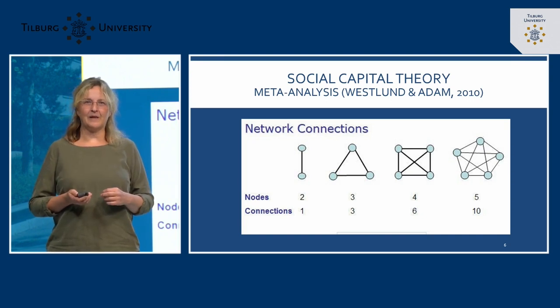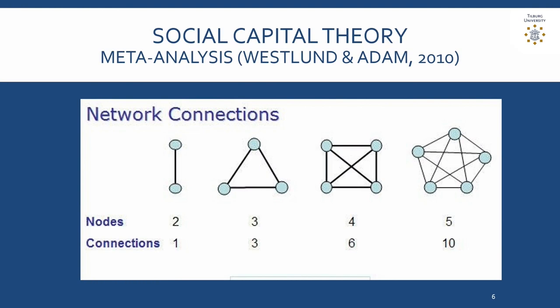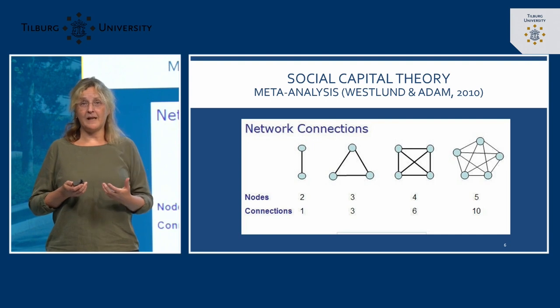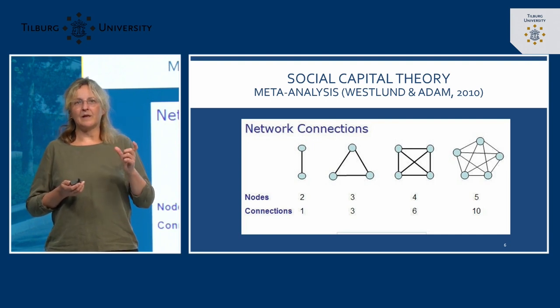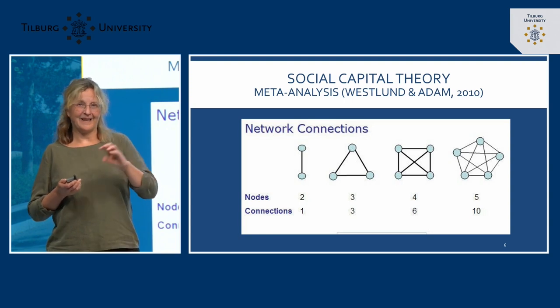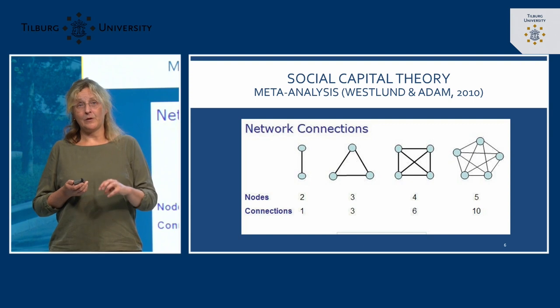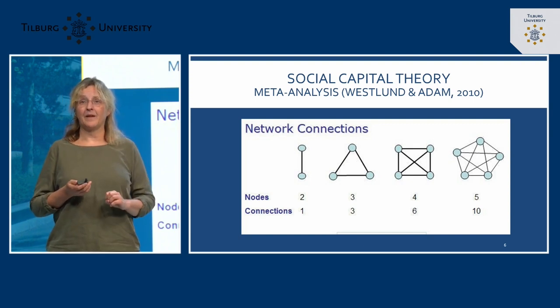An interesting side-step is how to research social capital. In network figures, dots represent individuals or teams, and lines indicate relationships — working together, a contract, or liking each other. Someone's position in the network determines how strong their social capital is, as does the quality of the lines, often indicated by thicker or thinner lines. If somebody is central in a network with many thick lines going out, that person is in a very advantageous position with strong social capital.